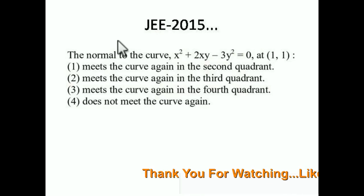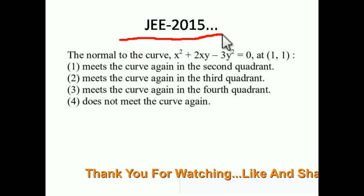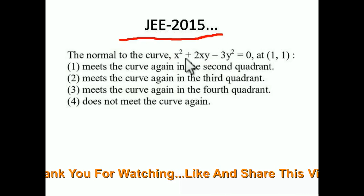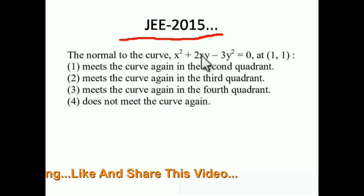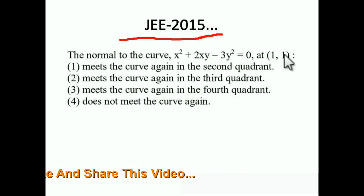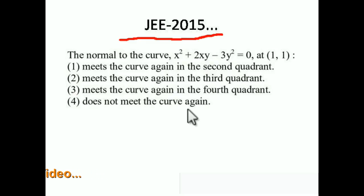This next question is from application of derivatives, not ellipse. The normal to the curve x² + 2xy − 3y² = 0 at (1, 1) — the options are: meets the curve again in the second quadrant, third quadrant, fourth quadrant, or does not meet the curve again. We need to find the slope of the curve, then the slope of the normal, then the equation of the normal, and then find where it intersects the curve.